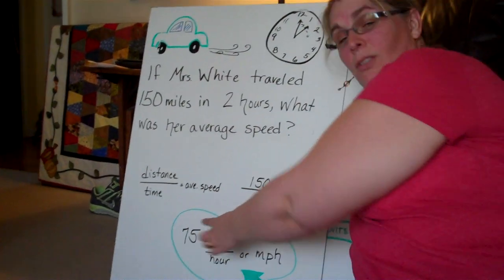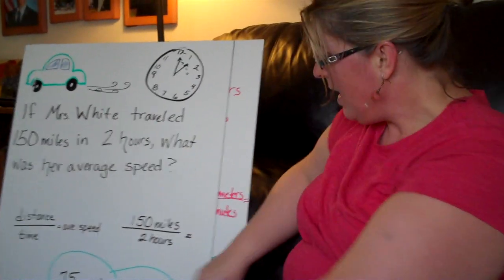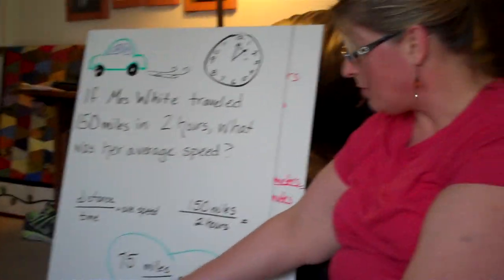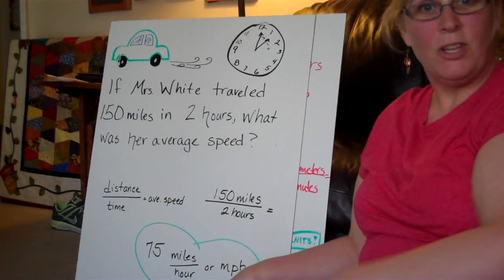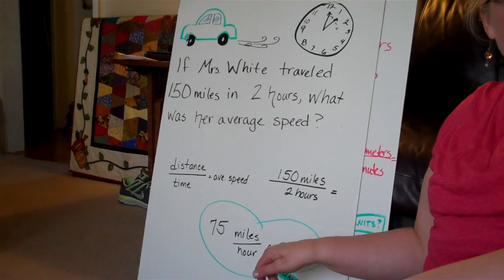Meaning 150 divided by two equals 75. And then you write down miles divided by hours or miles per hour. You're familiar with that unit. That's a unit you hear about in the car.